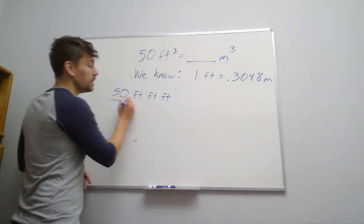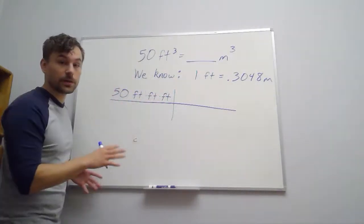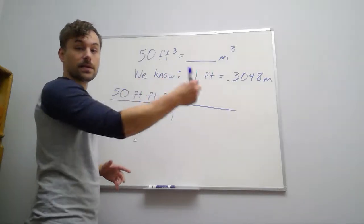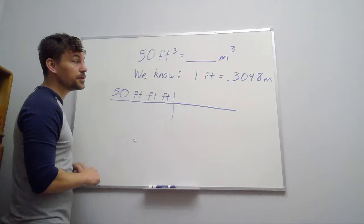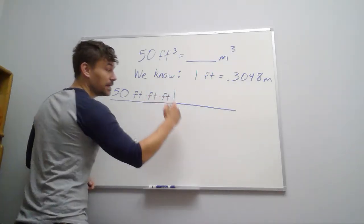And so if we start with that, we know that we need to get rid of all three of those and end up with three sets of meters so that we get our cubic meters. So we can use our conversion. We can say, okay, if I need to get rid of feet, that means I've got feet on the top. I better get feet on the bottom.